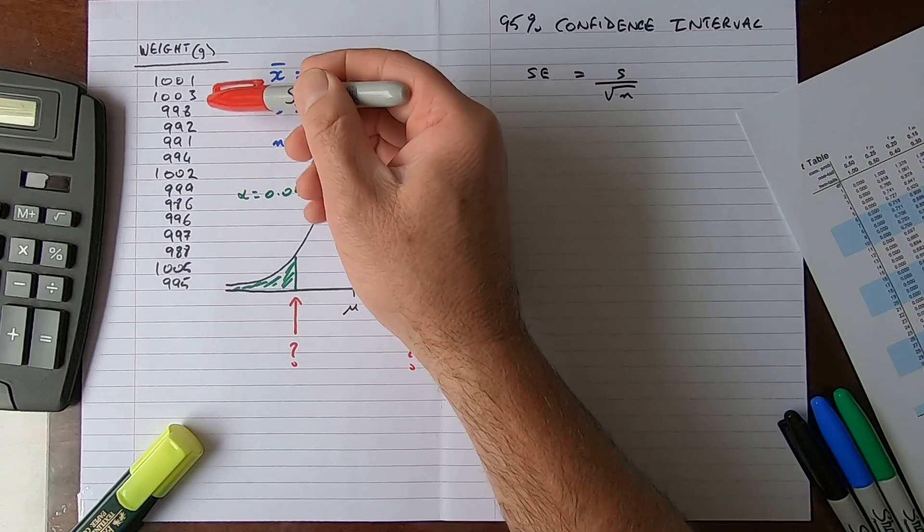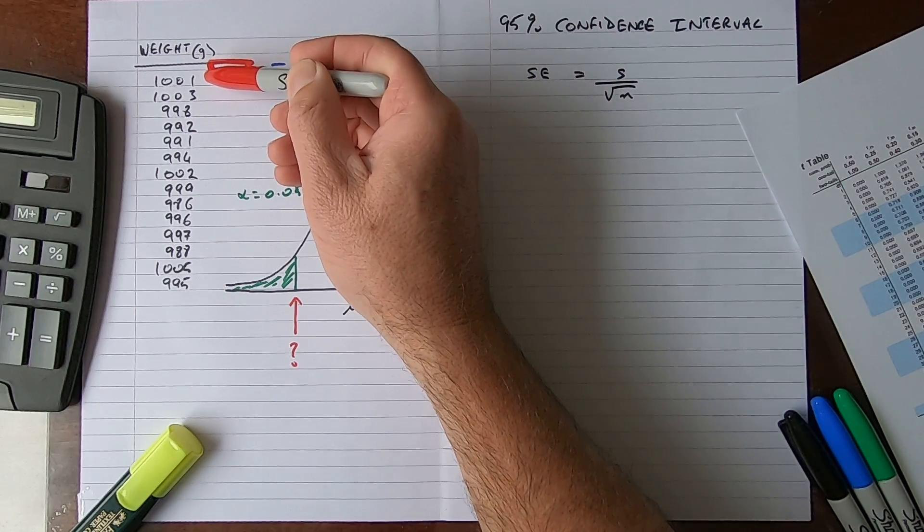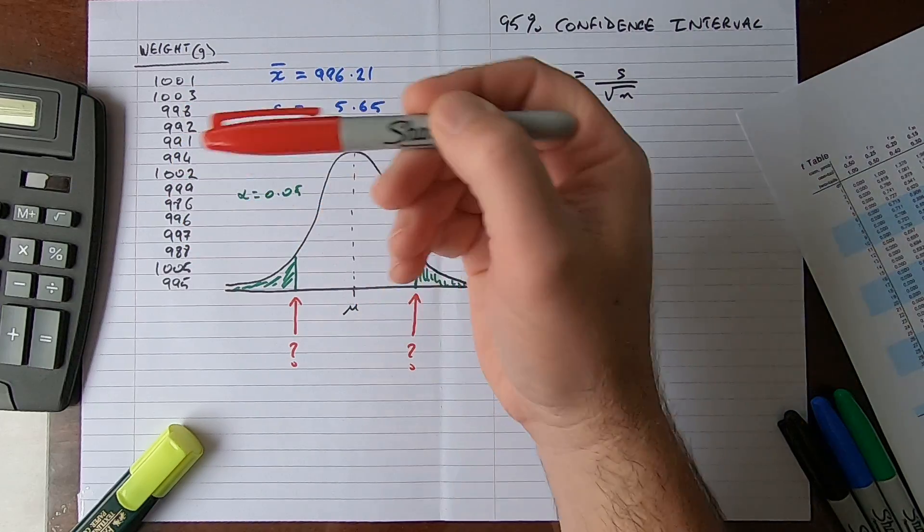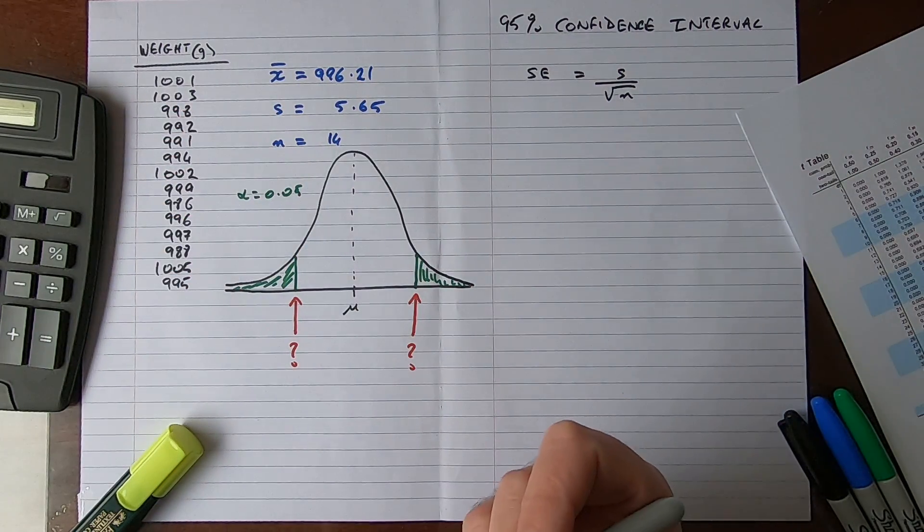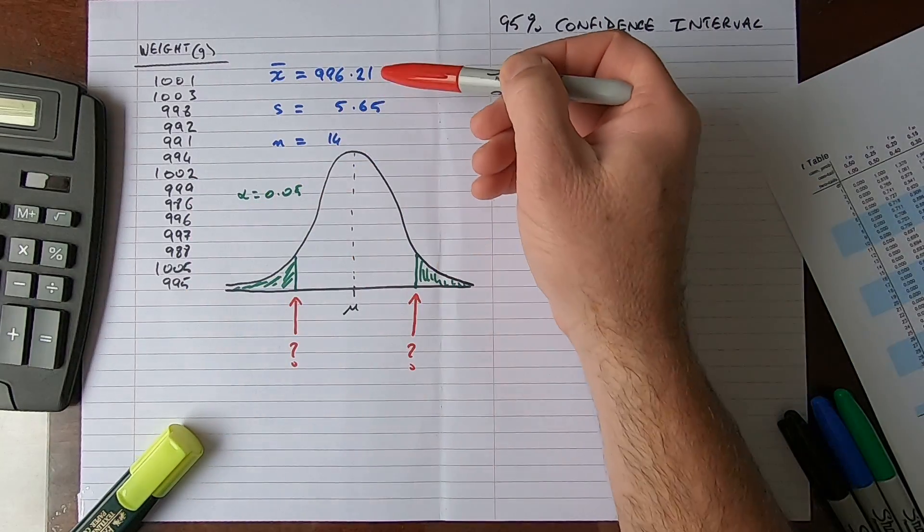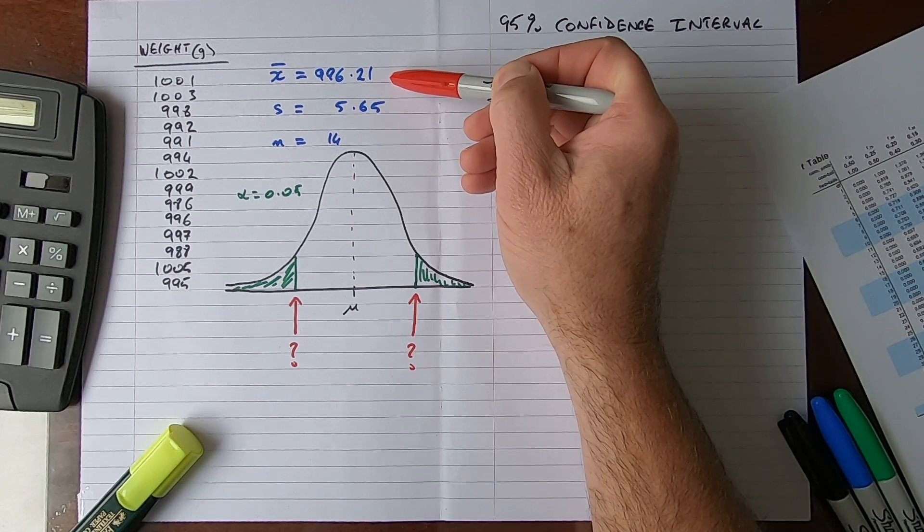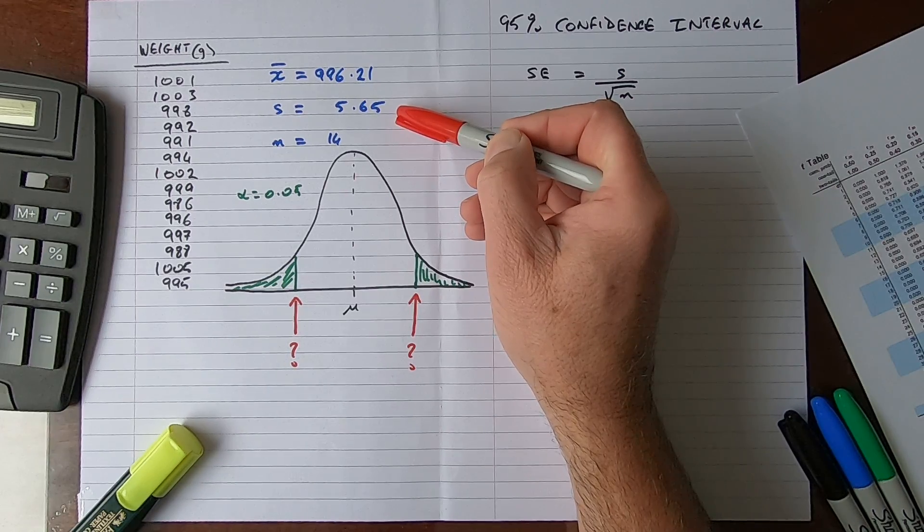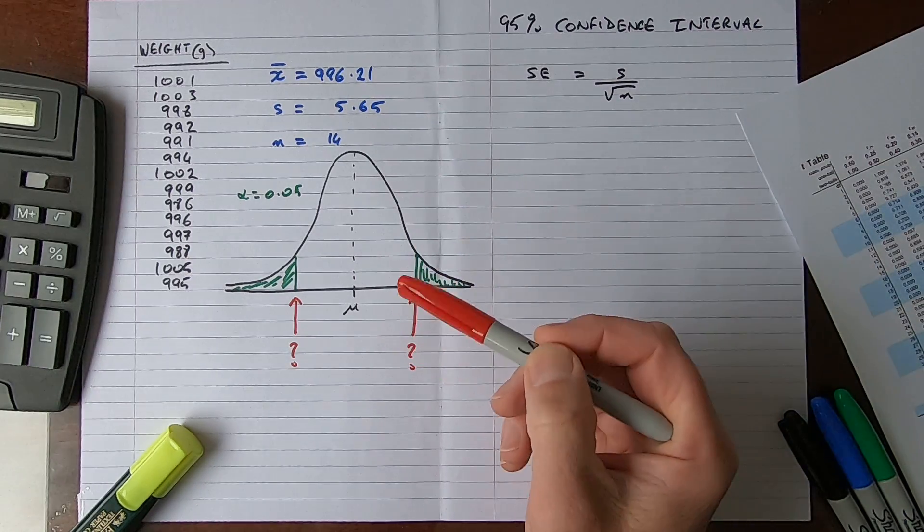I've used this data before in previous videos. These are the data for 14 randomly selected bags of food which weigh 1 kilogram or 1,000 grams, randomly selected from a production line as part of a quality control process. The sample mean X̄ equals 996.21 grams, the standard deviation s equals 5.65, and the sample size n is 14. We're going to need some of these values in our later calculations.